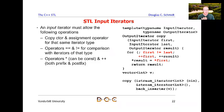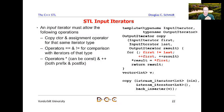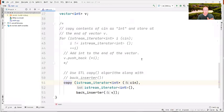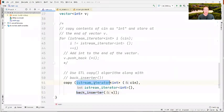Copy is going to march through that range from beginning to end, copying each element from the input iterator and storing it into the output iterator, then advancing both the input and output iterators. That's what copy does. Now let's look at what istream_iterator does under the hood — it creates an object that can be used to read the contents.